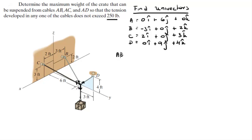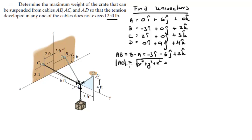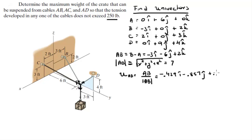Now, to find the unit vector AB, you first find the vector AB by subtracting A from B, which gives (-3i - 6j + 2k). Then you find the magnitude: the square root of 3² + 6² + 2² = √49 = 7. The unit vector AB is then the vector divided by its magnitude, which equals (-0.429i - 0.857j + 0.286k).